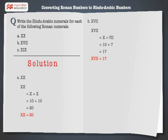Finally, let's solve the last problem. XIX can also be written as X plus IX. The Hindu-Arabic numeral for X plus IX is 10 plus 9, or 19. Hence, XIX is equal to 19.